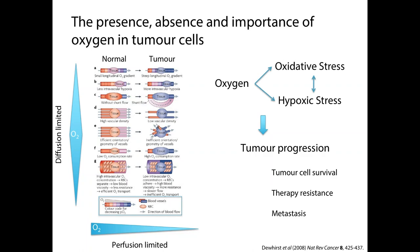So this means that we have a high degree of heterogeneity in tumors in respect of the oxygen delivery, the supply and demand, and this can lead to a balance where in some areas we have cells undergoing hypoxic stress due to an absence of oxygen, whereas in others we can have cells undergoing oxidative stress due to a high supply of oxygen. In both cases, however, this can lead to tumor progression, and in particular, it has been implicated in enhancing cell survival, increasing therapy resistance, and also enabling metastasis.